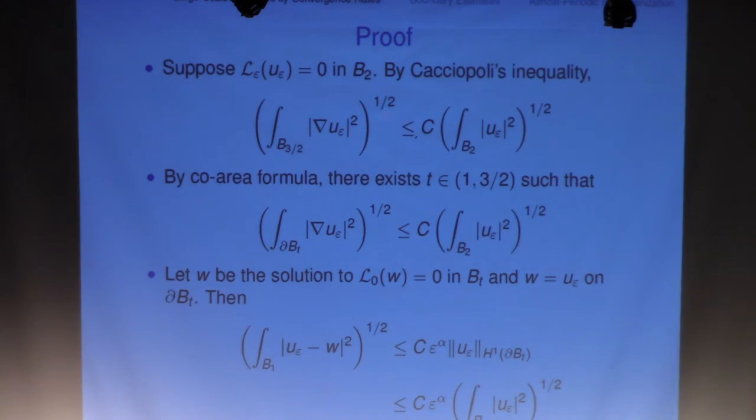So first of all, you have a Caccioppoli, so that the integral of the gradient L squared on B three-half is bounded by the integral of the solution L2 norm on B2. That's just a Caccioppoli.